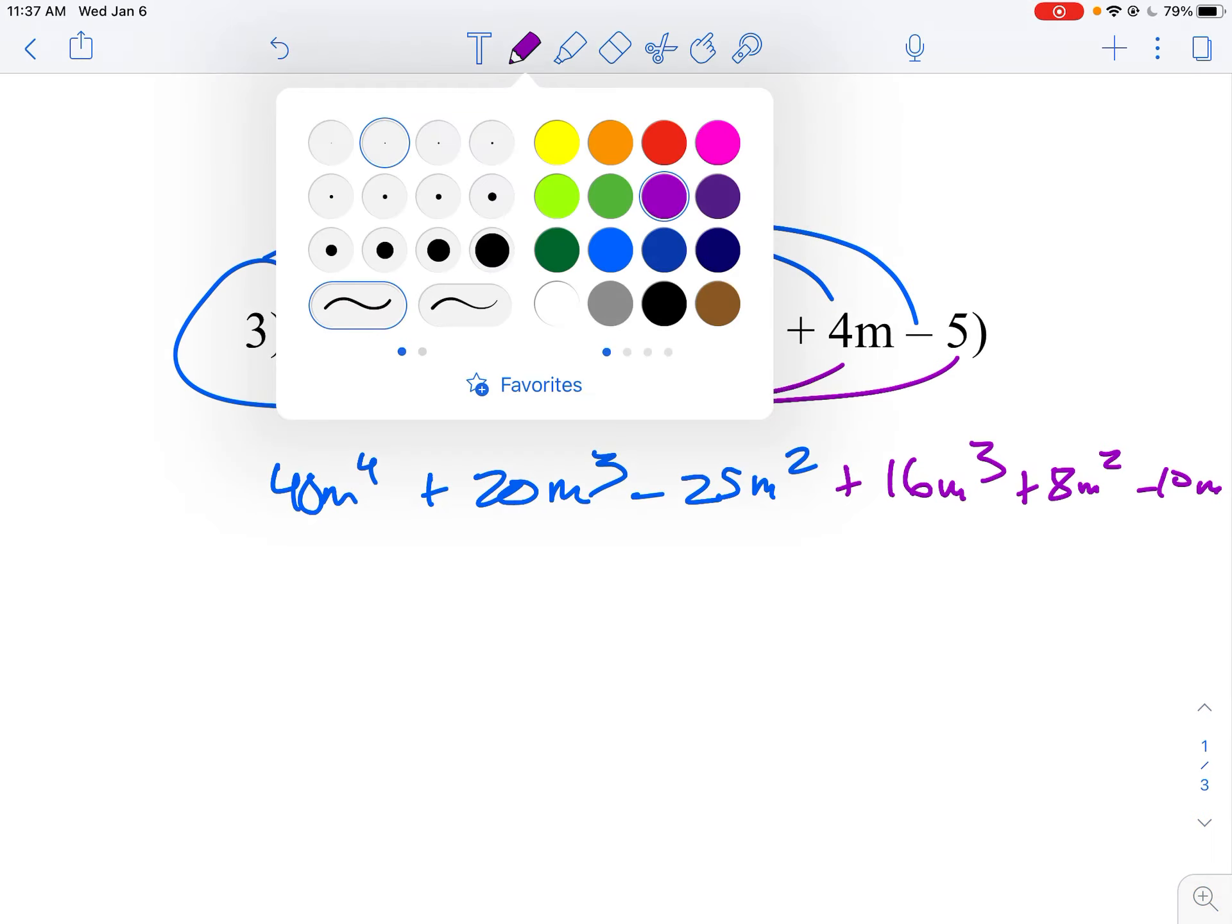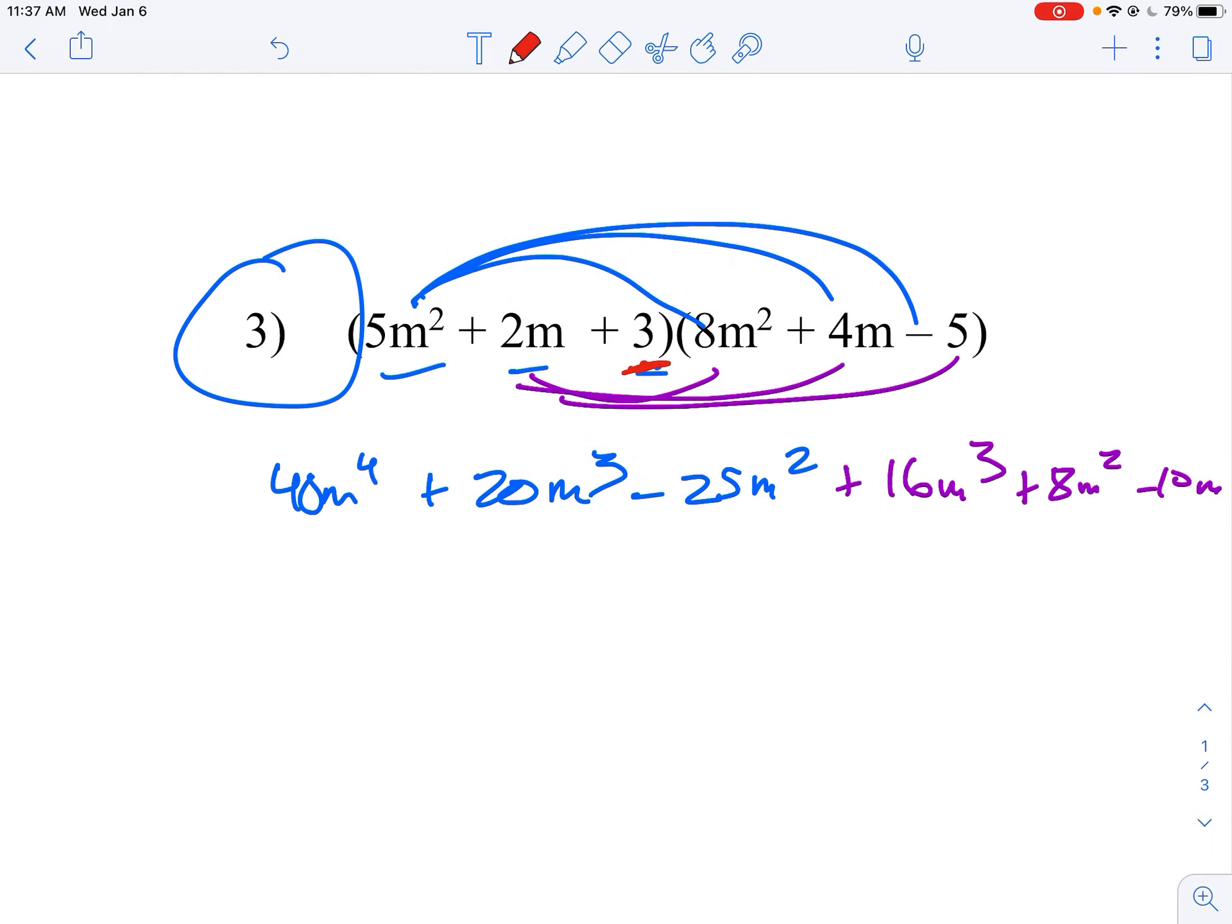And then you have to take the third one and times it through. Let's do red. You've got to do 3 times the 3 there. So it's going to be plus 24m² plus 12m minus 15. And now you have all of these terms. There's 9 of them.